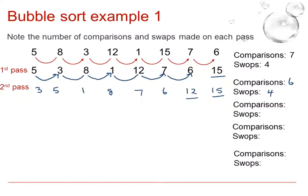Let's carry on. For the third pass then, we will compare the 3 and the 5, no change, but the 5 and the 1, there will be a swap. The 5 and the 8, no swap. The 8 and the 7 will swap and so will the 8 and the 6. Thus, for this we have had 5 comparisons and 3 swaps.